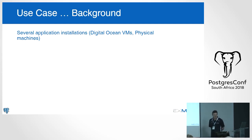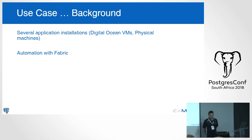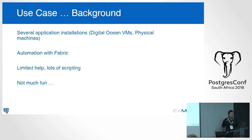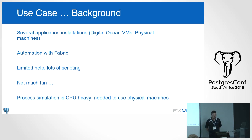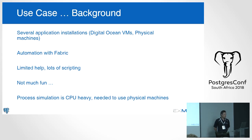Our story: we have several applications deployed to clients, previously installed on DigitalOcean VMs and a few physical machines. We used to automate with Fabric. Someone tweeted yesterday about being skeptical whether Ansible is better than Fabric — we did use Fabric and it didn't really help us; you have to do a lot of Python scripting. I said yesterday it was hell, and that's closer to the truth. Our simulations are CPU-heavy, and getting that kind of CPU power in the cloud is still expensive, so we decided to buy physical machines.